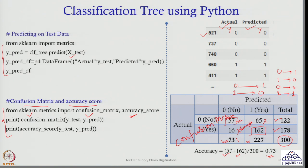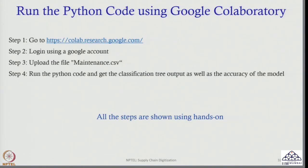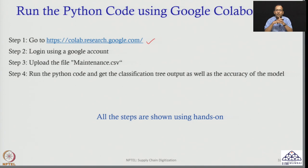Now we will take you to Google Colab and run this code to get the same output. Go to colab.research.google.com, login using your Google account, upload the data file maintenance.csv, and then run the code step by step. In the next 3–4 minutes I will show you how to run the code and get the same output — the code has already been explained; we will just execute it.